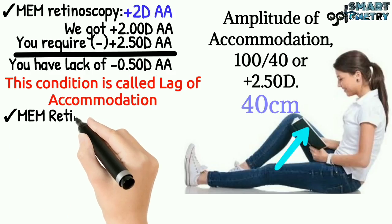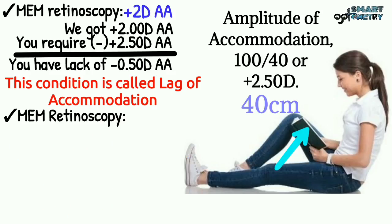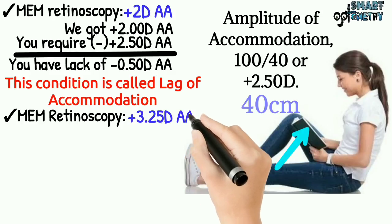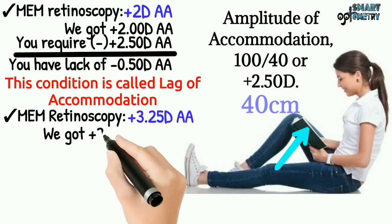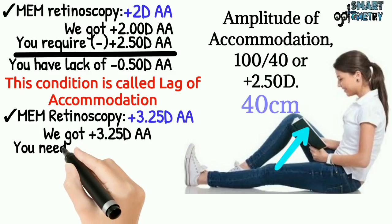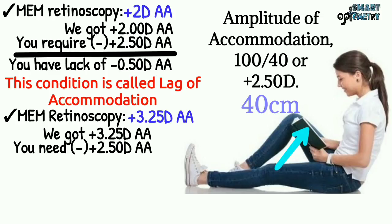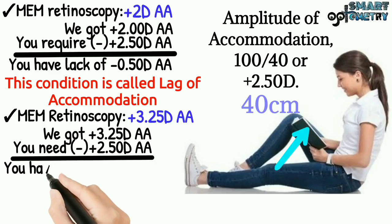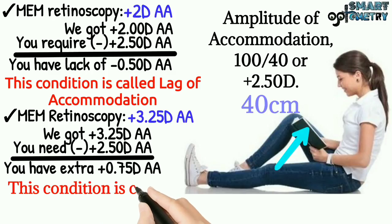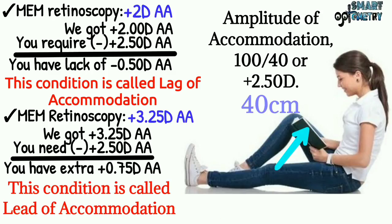Now suppose in monocular estimated method retinoscopy we get your amplitude of accommodation as plus 3.25 diopters. But you only need plus 2.5 diopters. So you have an extra 0.75 diopters amplitude of accommodation. This condition is called lead of accommodation.